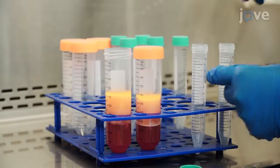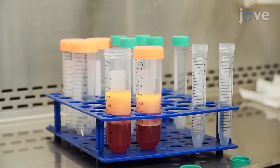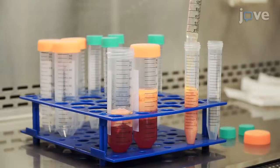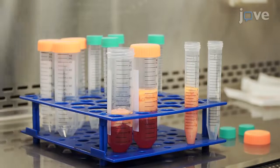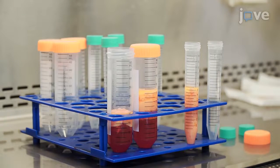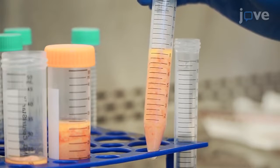The upper layer in the tube is the Coleman fat fraction. Transfer the upper two-thirds of the Coleman fat into a new 15ml tube. This portion is considered the high-density fat.